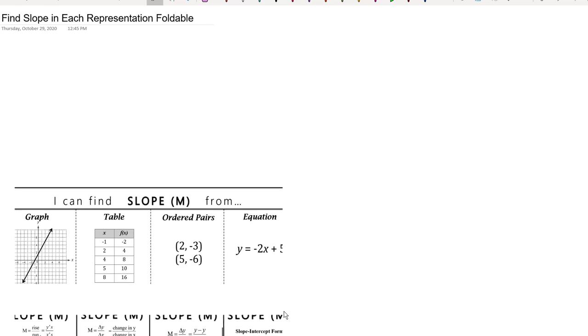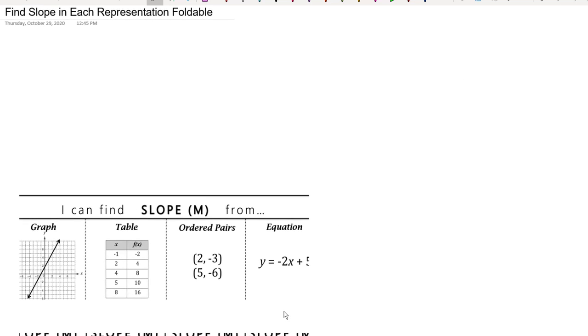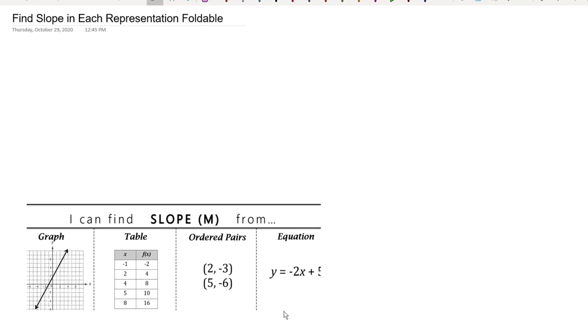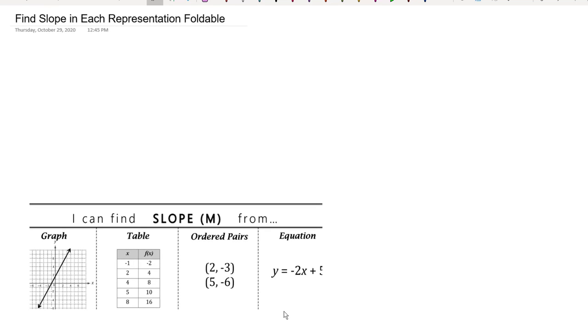So now we're going to finish up the last two segments in our finding slope from each representation foldable. We're going to find out to find slope from ordered pairs first, and then we'll finish up with finding slope in an equation.